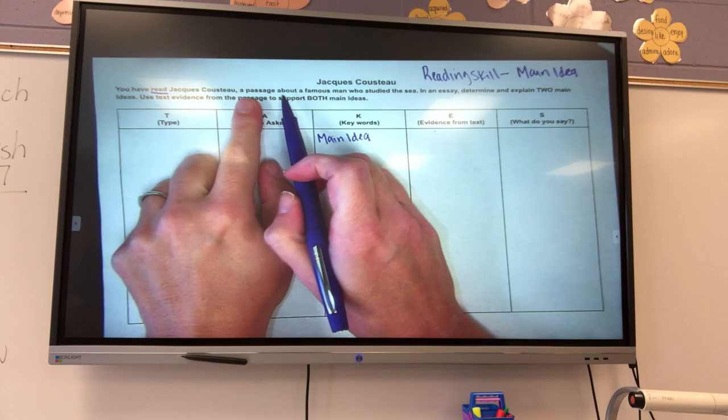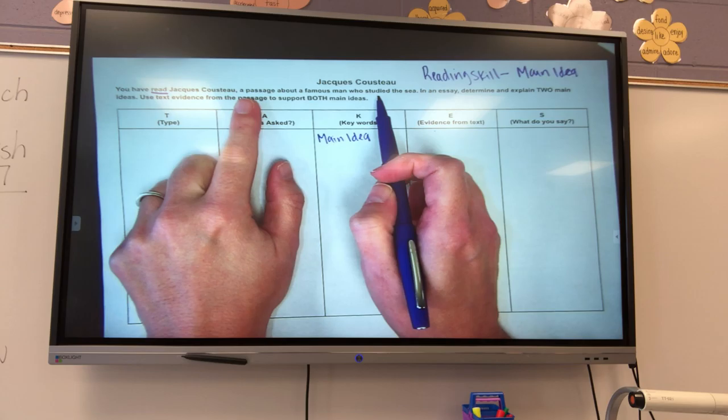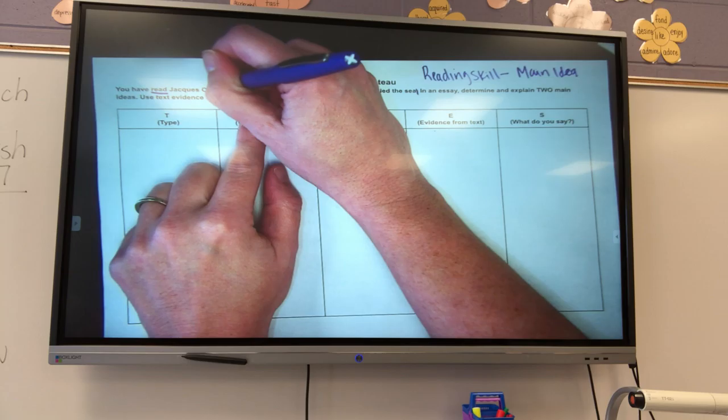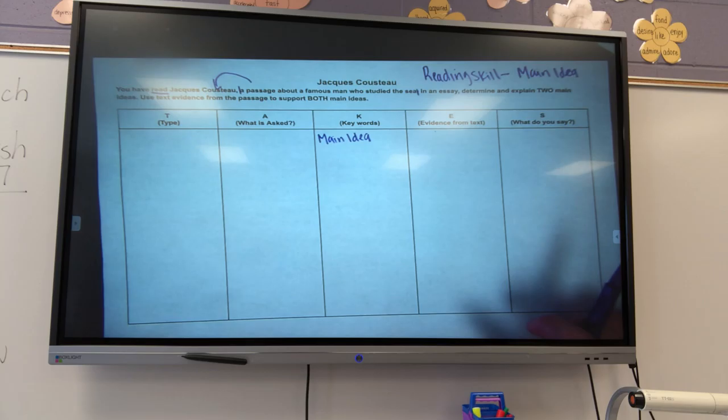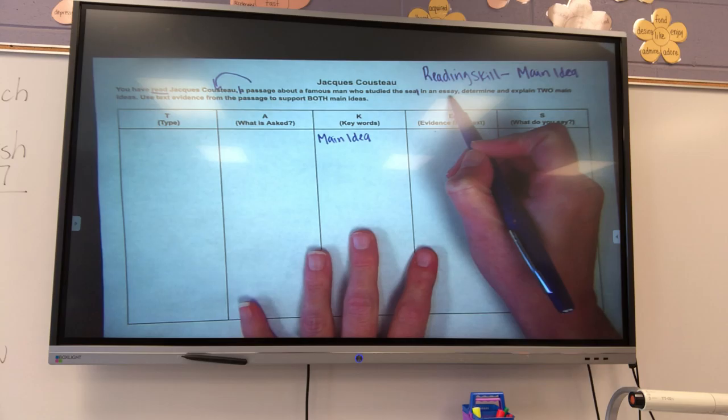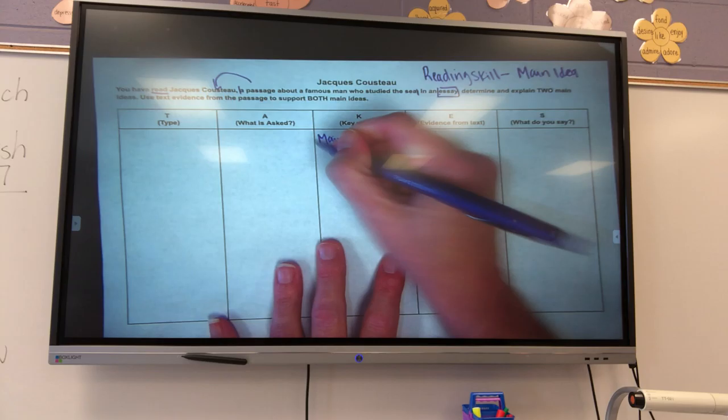It says, You have read - that's a verb, that's something I do - a passage about a famous man who studied the sea. Now, it has studied in there, but this is just telling me what my passage is about. So it's not telling me to do anything, so I don't underline a verb in that part.